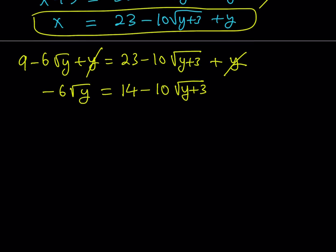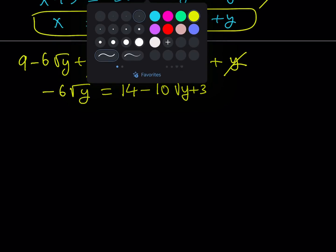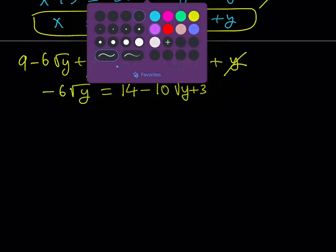Now I'd like to simplify by dividing everything by 2. That gives me negative 3 times the square root of y equals 7 minus 5 times the square root of y plus 3.